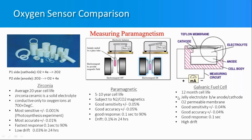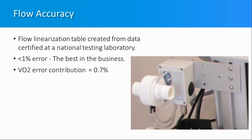Flow is really important as a parameter. The Moxis metabolic cart has a very low flow error of around 1% on average, and its contribution to VO2 error is quite low as well.